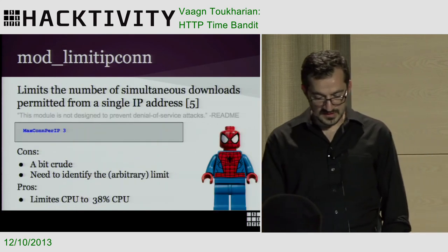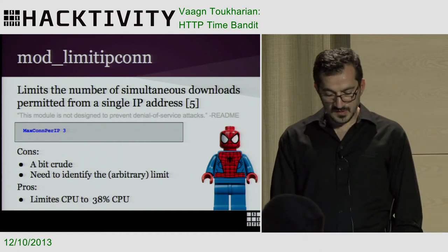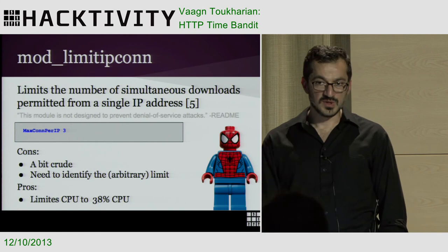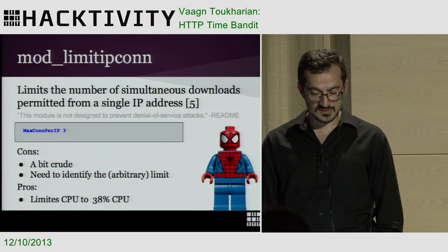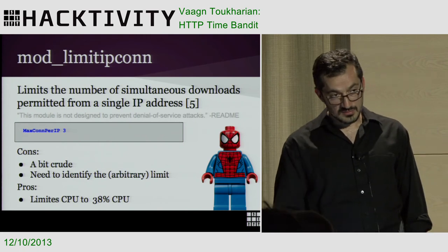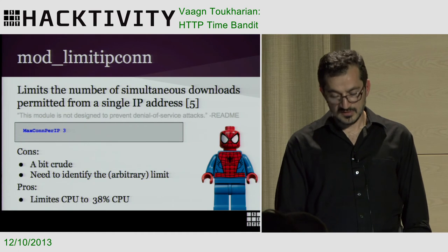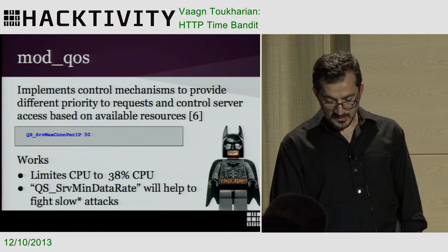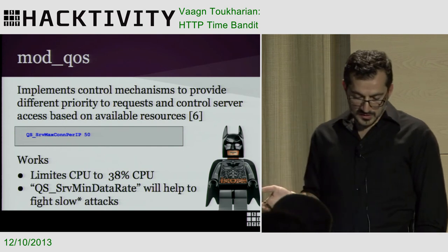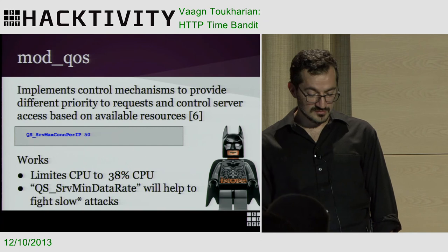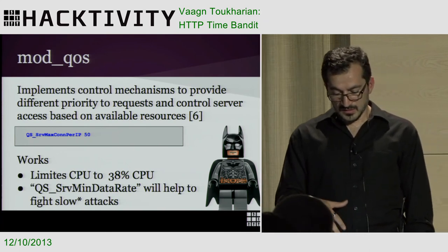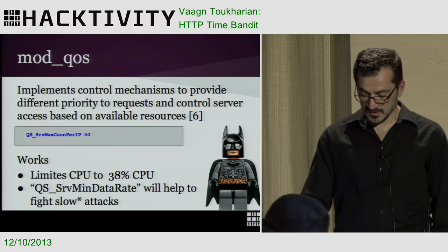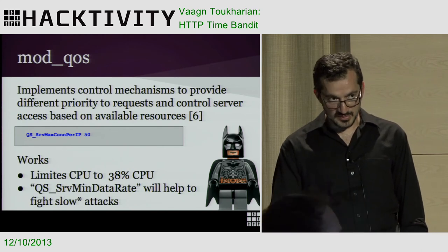Another module we found and tested was also useful. It's an IP-based limiter — you set it to some limit per IP and it cuts down CPU usage on the server right away. The problem is it's very crude and you need to tune the limit carefully. Another module, mod_qs, is a bit smarter and works in a similar but more intelligent way.